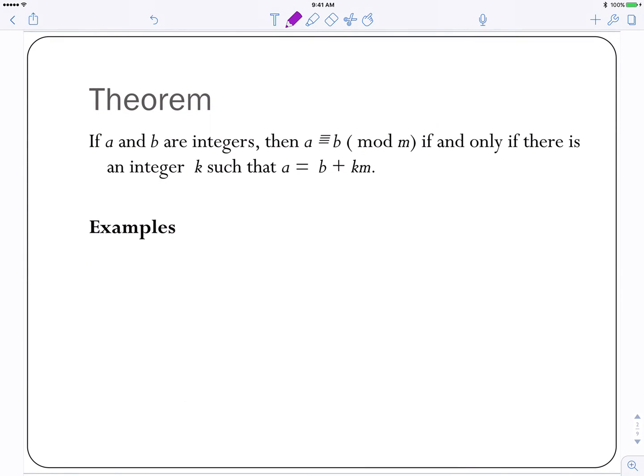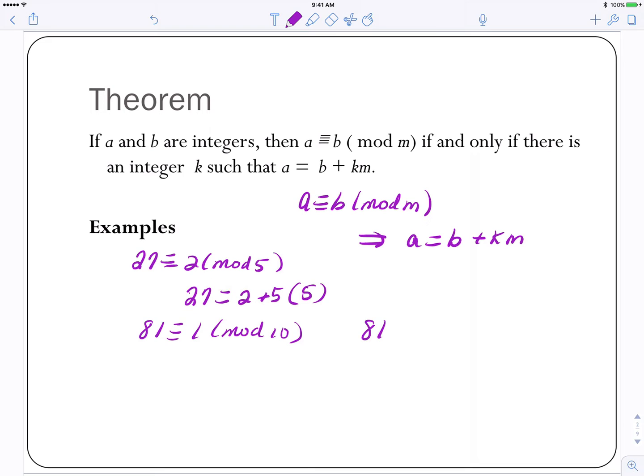So again, pause the video and take a look at this theorem. So we've got A congruent to B mod M. This tells us that A can be shown to be equal to B plus some multiple of M. So looking back at our examples, we said 27 was congruent to 2 mod 5. That tells me by this theorem I could write 27 as 2 plus some multiple of 5, and in fact it would be 5 times 5. We said 81 was congruent to 1 mod 10. And again, we can write 81 then as 1 plus some multiple of 10, and that multiple is 8 this time. So just a different way to look at congruences.